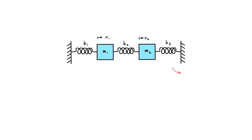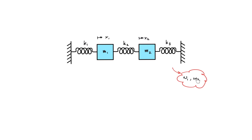We have derived the eigenvalues — the first and second natural frequencies — of the two degree of freedom system. Next, we will look at how the system behaves at each natural frequency, specifically the motion of M1 relative to M2. For the first natural frequency, M1 and M2 will move in phase with the same magnitude of displacement; for the second, they will move out of phase. We will solve the eigenvectors from the equations of motion.